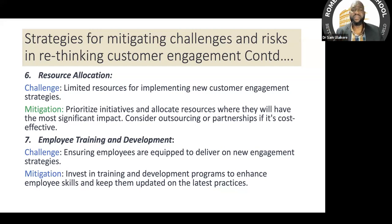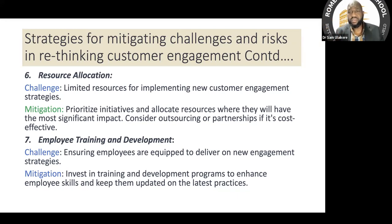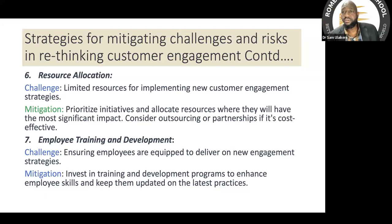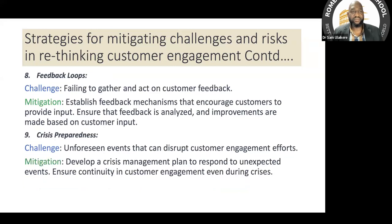For employee training and development, ensure employees are equipped to deliver on new engagement strategies. Invest in training and development programs to enhance employees' skills and keep them updated on the latest practices. That is what Rome Business School is doing — equipping students to compete favorably. For feedback loops — failing to gather and act on customer feedback — establish feedback mechanisms that encourage customers to provide input, and ensure this feedback is analyzed and acted upon.